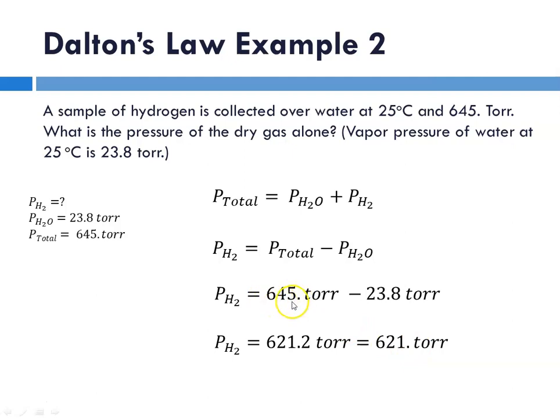Why did I round it for addition? This number ends at the ones place. This number ends at the tenths place. So we have to round to whichever number has fewer digits to the right of the decimal. So our answer would be 621 torr.